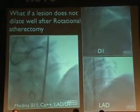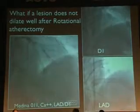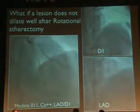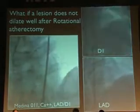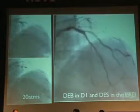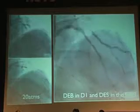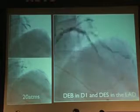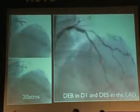What if a lesion does not dilate after rotational atherectomy? We had a Medina 0-1-1 bifurcation — a diagonal-LAD junction — severely and densely calcified. We did rotational atherectomy into the diagonal branch and into the LAD, then kissing balloon inflation. At 20 atmospheres the diagonal balloon would not yield. We went up to a 1.75 burr — it still wouldn't yield. When you use very large burrs inside branches you increase perforation risk. If you've done what you can with rotational atherectomy and the lesion still doesn't yield, the best thing is not to put a stent there. I did a drug-eluting balloon in the diagonal branch and put a stent into the LAD.